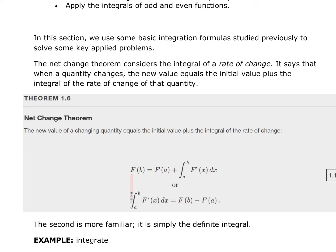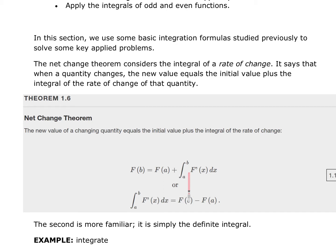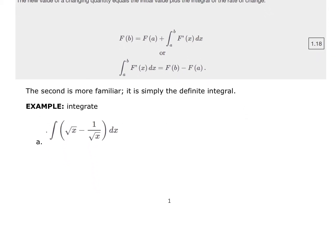Capital F is the anti-derivative, and capital F prime is our derivative. The second formula, which we see more frequently, is: the integral from A to B of F prime of x dx equals the anti-derivative evaluated at B minus the anti-derivative evaluated at A. We can also express this as F(B) equals F(A) plus the integral from A to B of F prime of x dx. The second form is the one we see most frequently.